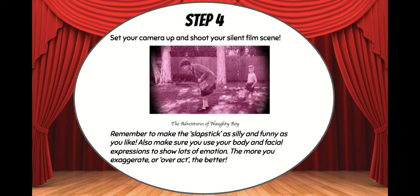Step four: set up your camera and shoot your silent film scene. Remember to make the slapstick as silly and funny as you like — that way it's most enjoyable for the audience. You also need to make sure you use your body and facial expressions to show a lot of emotion, because the more you exaggerate or overact, the better and funnier it's going to be for your audience. Think big — use lots of big actions.